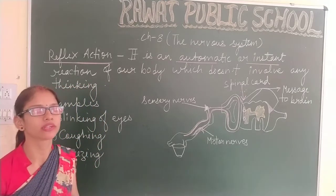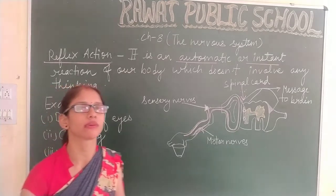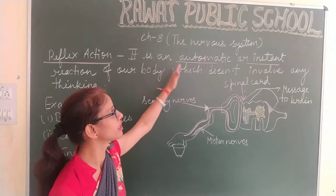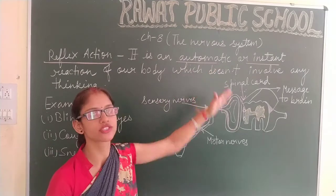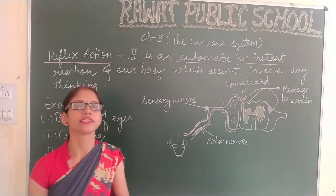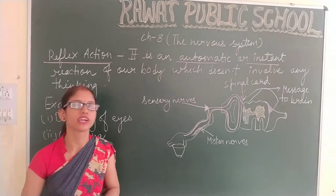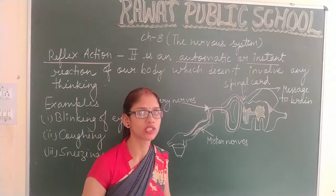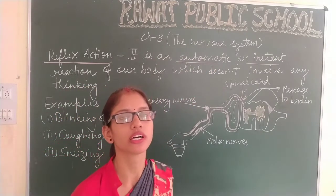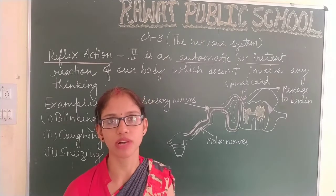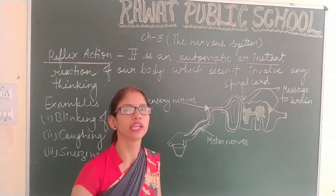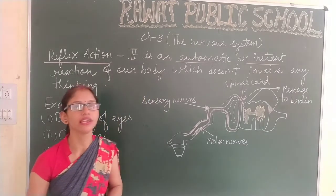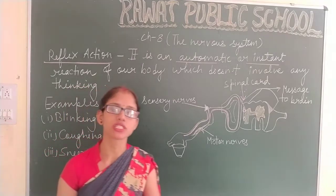we have started our new chapter, that is chapter number 8, the Autonomic Nervous System. And in this system, we have learned about the major parts of the nervous system — brain, spinal cord and the nerves.